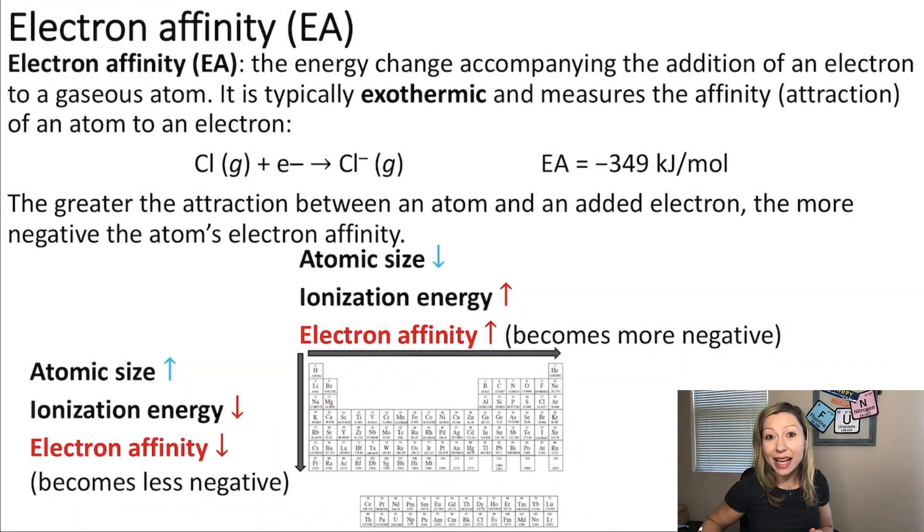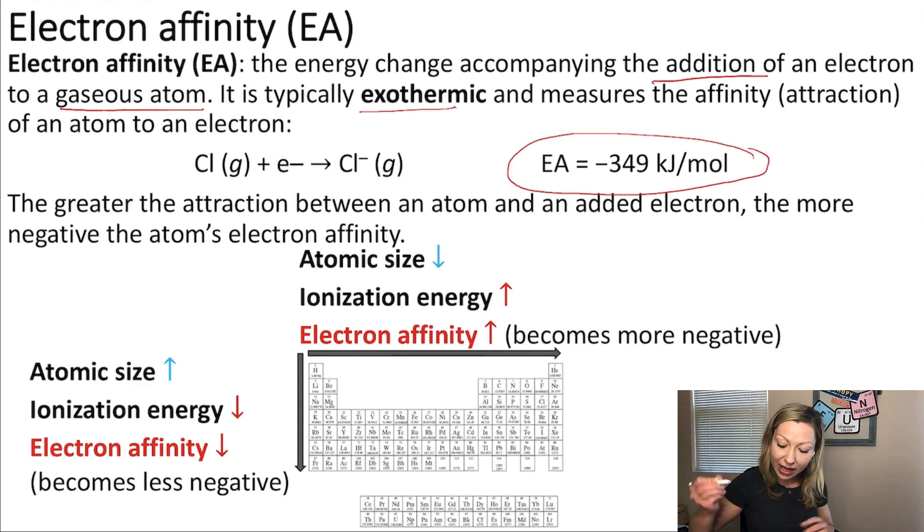Hello guys, let's talk about electron affinity. If you watch my video on general trends in the periodic table, you already know that electron affinity is actually the energy change accompanying the addition of an electron to a gaseous atom. It is typically exothermic. This means that we are going to have a negative sign next to the electron affinity and it measures the attraction of an atom to an electron.